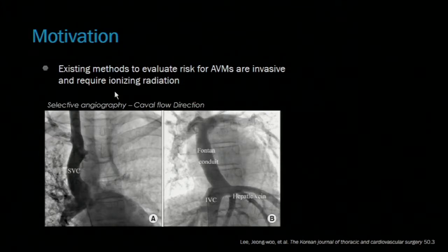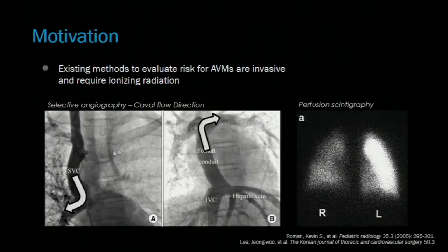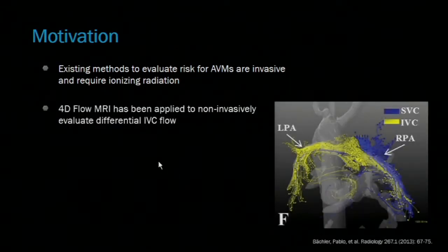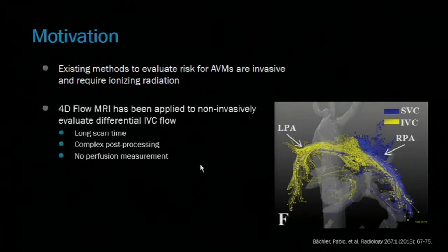Existing methods to evaluate the risk for AVM development require invasive procedures and exposure to ionizing radiation. The cavil flow direction can be monitored with selective angiography requiring catheterization, and the resulting lung perfusion can be measured with perfusion scintigraphy. But a non-invasive MRI-based technique would be beneficial for these pediatric patients. Recently, 4D flow has been applied to non-invasively measure this differential IVC flow, but the scan time and post-processing can both be very time-consuming, and this also doesn't provide a lung perfusion measurement.